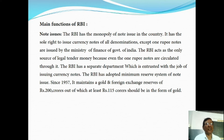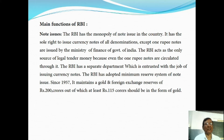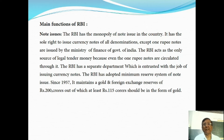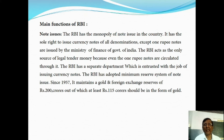The main functions of RBI are: first, note issuance. The RBI has the monopoly of note issuance in the country. It has the sole right to issue currency notes of all denominations except one rupee notes, which are issued by the Ministry of Finance and Government of India. The RBI acts as the only source of legal tender money because even the one rupee notes are circulated through it. The RBI has a separate department entrusted with the job of issuing currency notes. The RBI has adopted the minimum reserve system of note issuance since 1957, maintaining gold and foreign exchange reserves of Rs. 200 crores, out of which at least 115 crores should be in the form of gold.